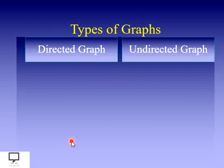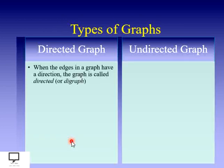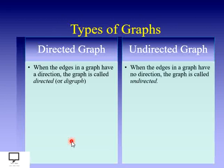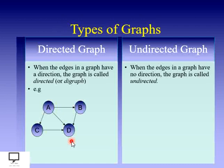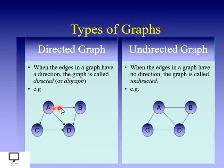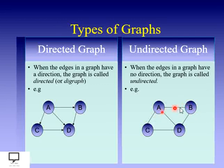A directed graph is one where the edges have a specific direction — they are called a directed graph or digraph. In an undirected graph, no edge has any specific direction, so they are called undirected graphs. Here you can see that edges have a specific direction — from A to B, A to D, and so on. In an undirected graph, no specific direction is mentioned, so both directions exist: A to B as well as B to A.